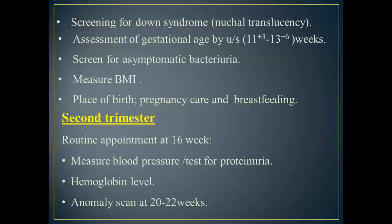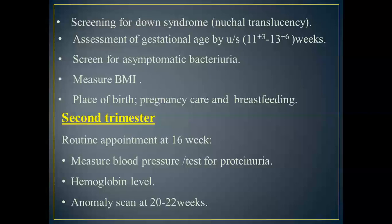In the second trimester, there are two important visits: at 16 weeks and at 20 to 22 weeks. At 16 weeks, we measure blood pressure, send CBC to check hemoglobin level, and test for proteinuria and any evidence of UTI by general urine exam. At 20 to 22 weeks, we advise the pregnant woman to have an anomaly scan — an ultrasound in which the sonographer screens for any structural anomalies of the fetus.